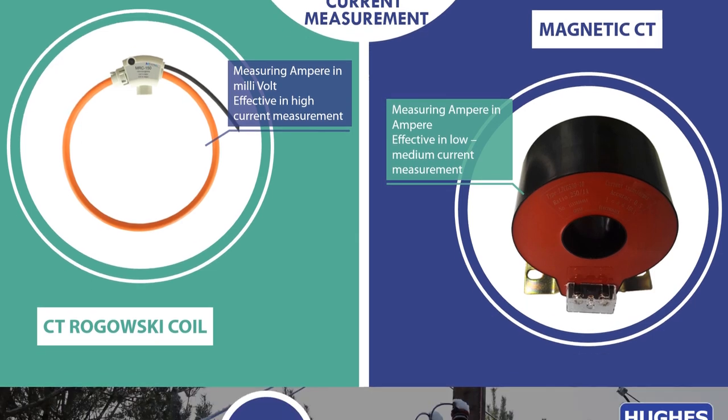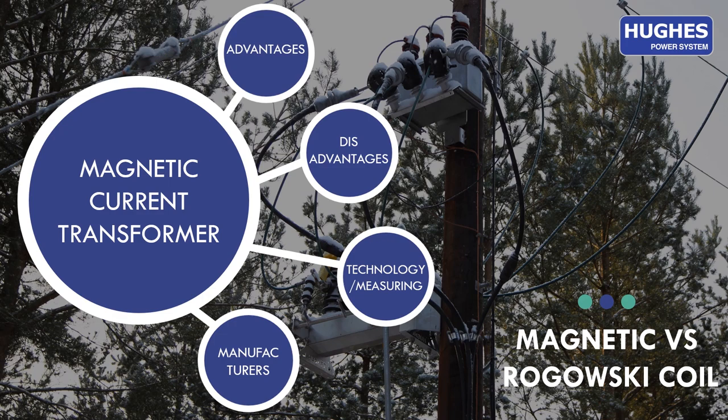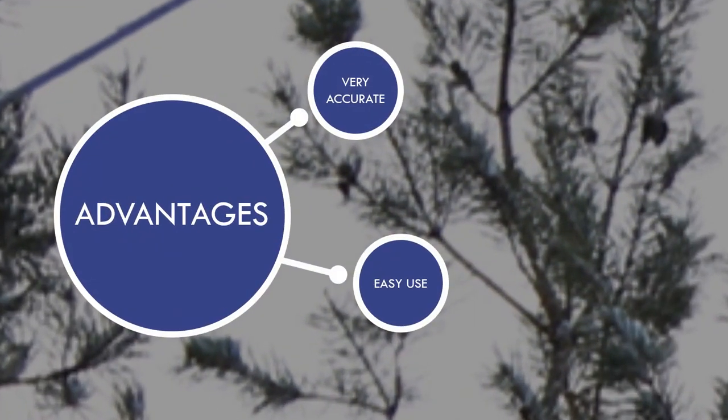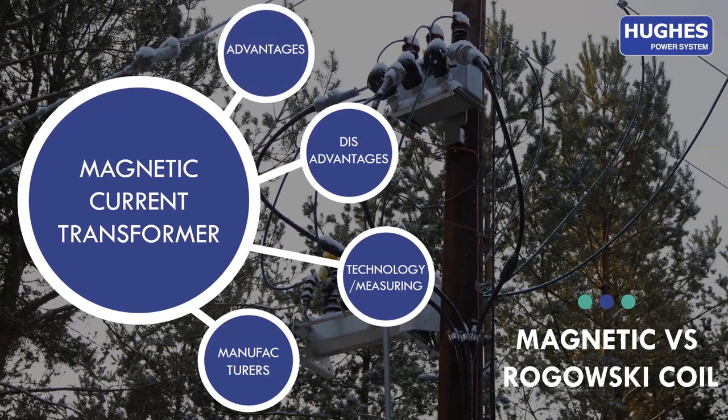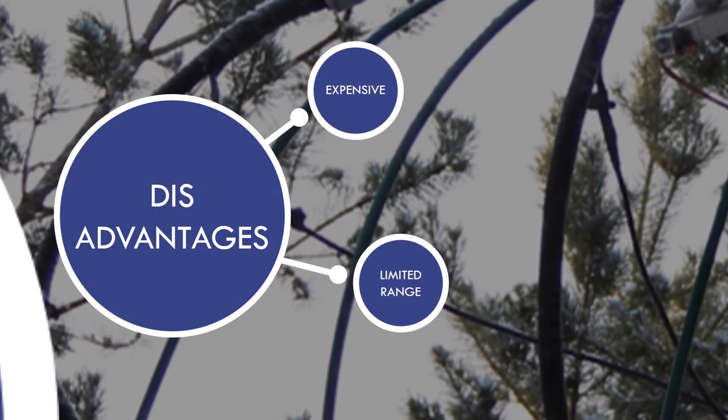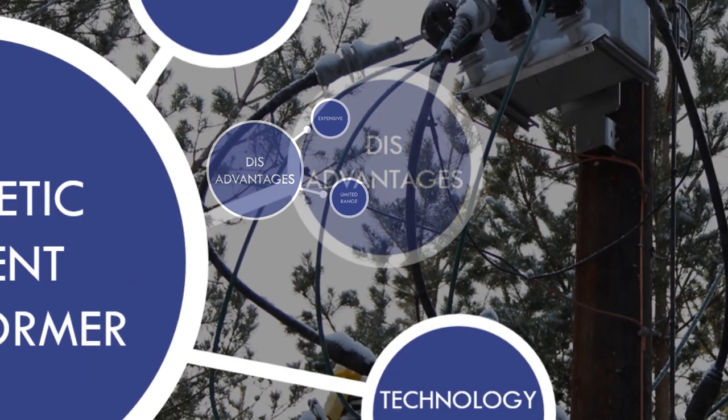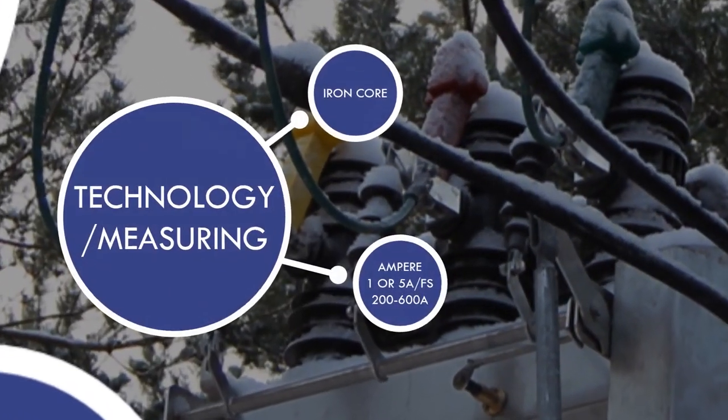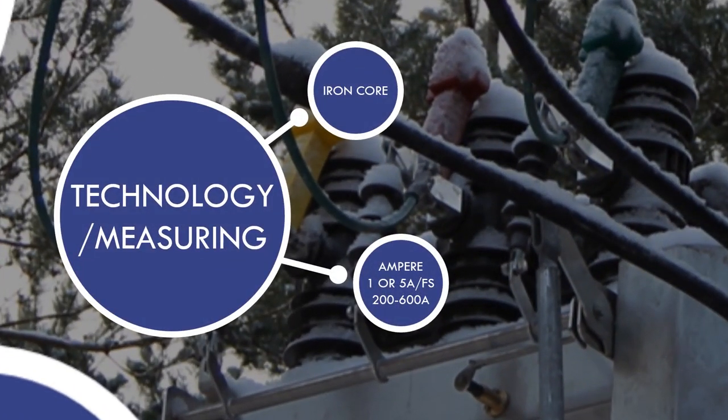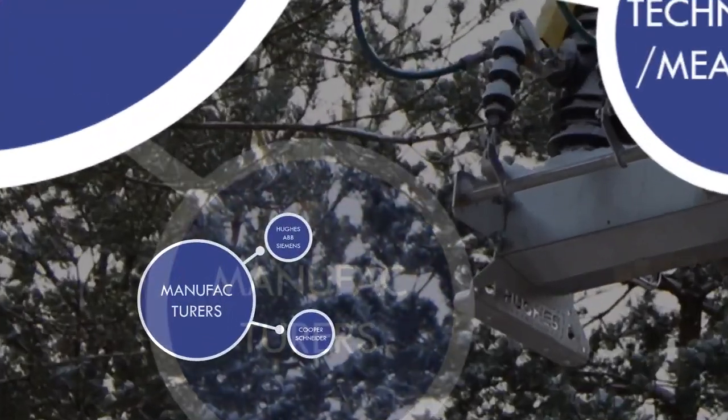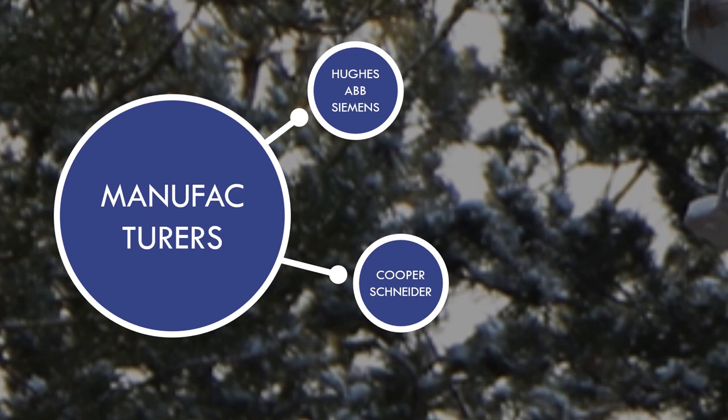Let's look at the parameters for both types. First is overview of a magnetic current transformer. Its advantages are very accurate measurement and easy to use. The disadvantages are that it is expensive and has a limited range due to its magnetic core. Next parameter is technology. Magnetic current transformer uses an iron core and output signal of 1 or 5 ampere. The manufacturers producing reclosers with magnetic current transformer include Hughes, ABB, Siemens, Cooper, and Schneider.